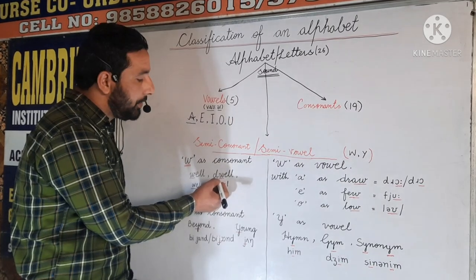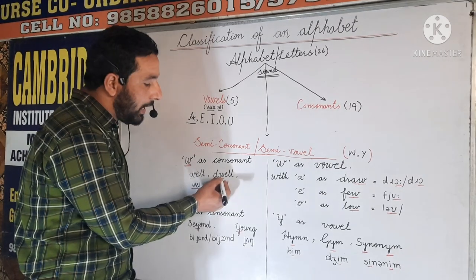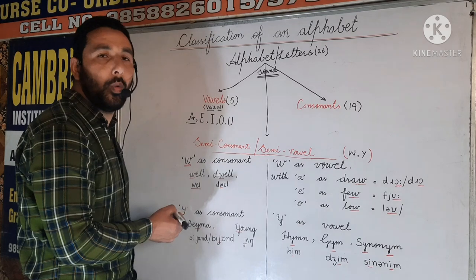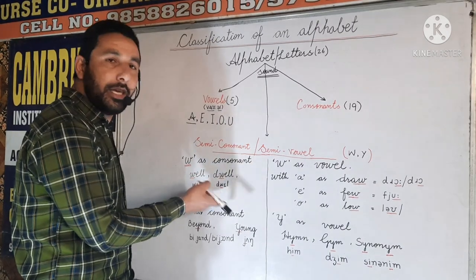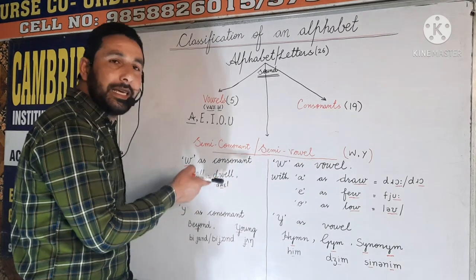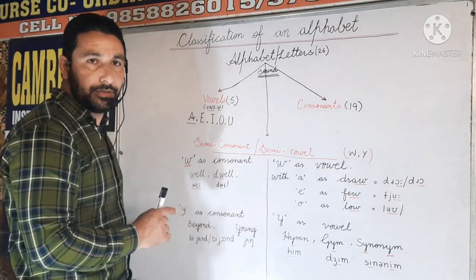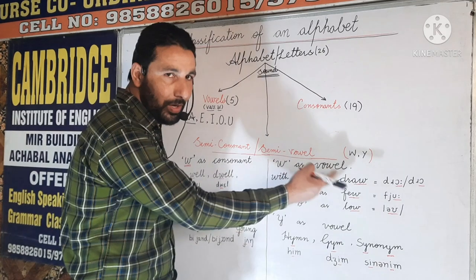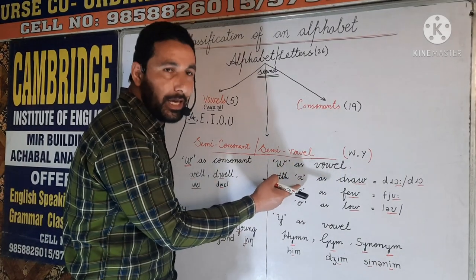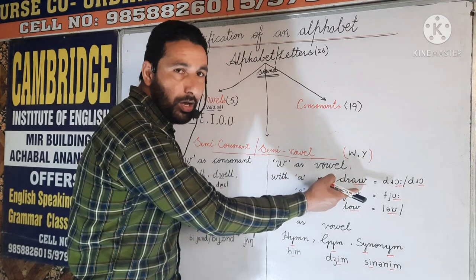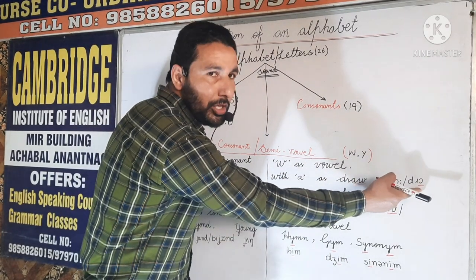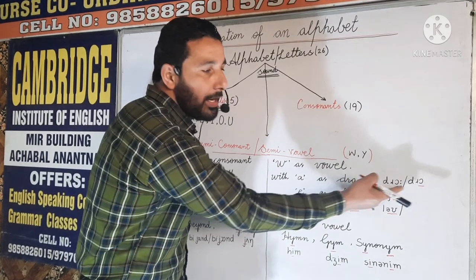We have another example, 'dwell.' Here again W has the sound /w/, and in phonetics W is considered a consonant sound. Now let us look at cases where W acts as a vowel. When W is with A, for example 'draw,' it has two pronunciations — one is 'draw' and another is 'draw' with a slightly longer sound.